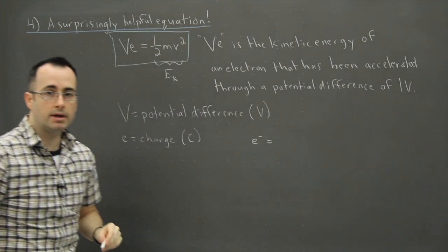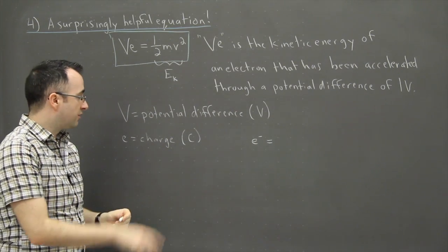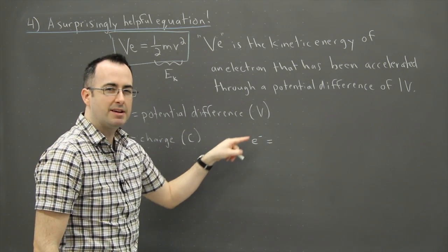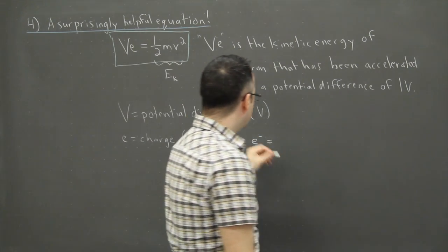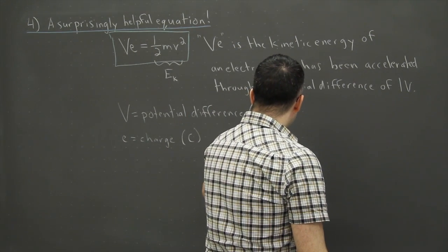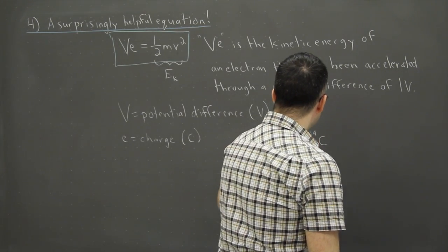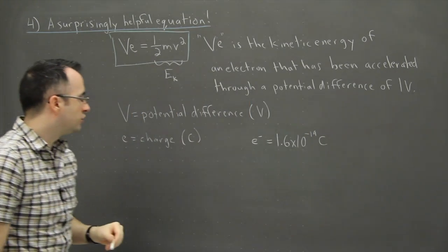that's on your data booklet. It's one of the first pages. So I put an E with a little minus just to tell me that's an electron. Those have a negative charge. And that number is actually well known. It's 1.6 times 10 to the minus 19 coulombs of charge.